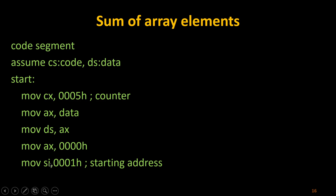Next I set the starting point of the array by moving 0001h into SI, specifying that elements start from position 1, and I can increment by 1 until it reaches 5, i.e., until CX is exhausted. SI is the source index register; I put the starting address 0001h in it, meaning the first element starts at 0001h.